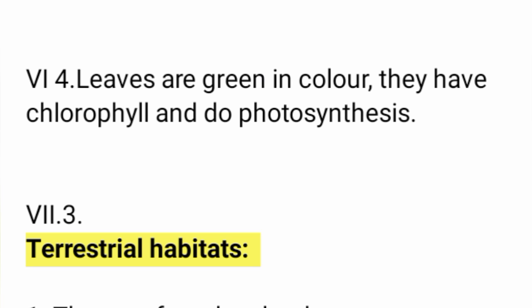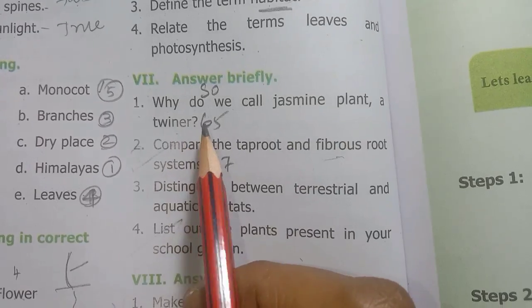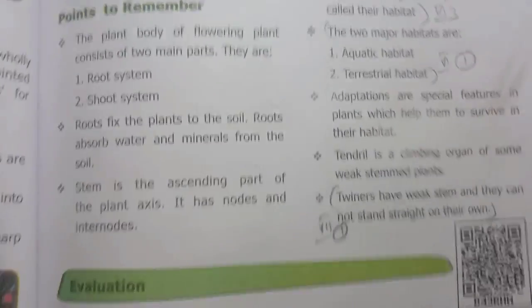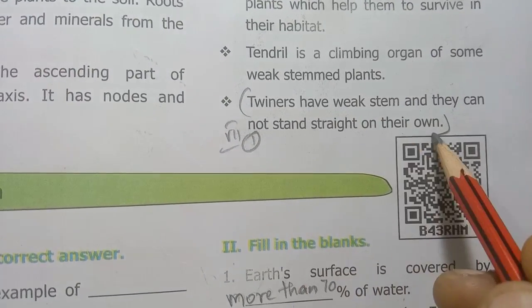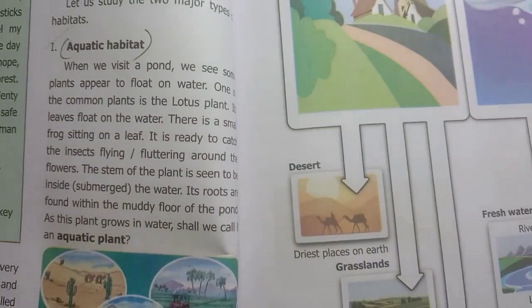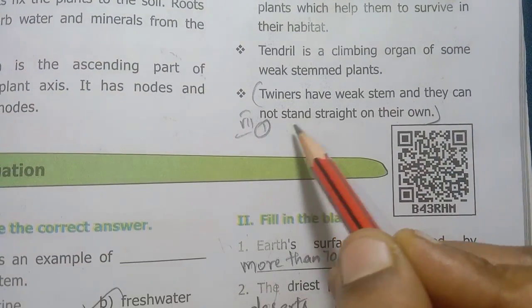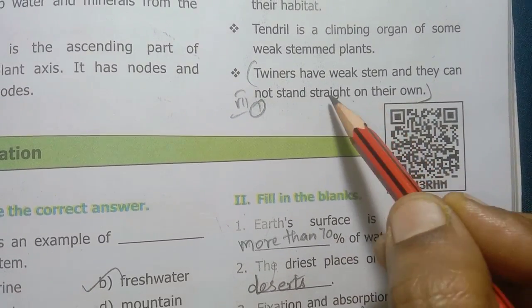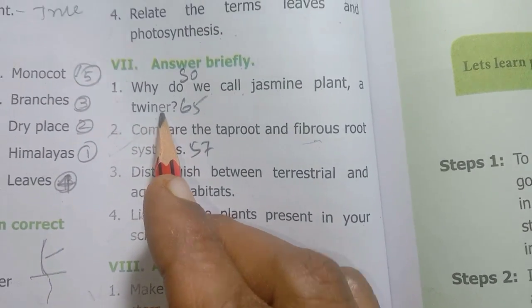Roman numeral 7 — Answer briefly. First: Why do we call jasmine plant a twiner? Twiners have a weak stem and they cannot stand straight on their own — that is why we call jasmine plant a twiner.